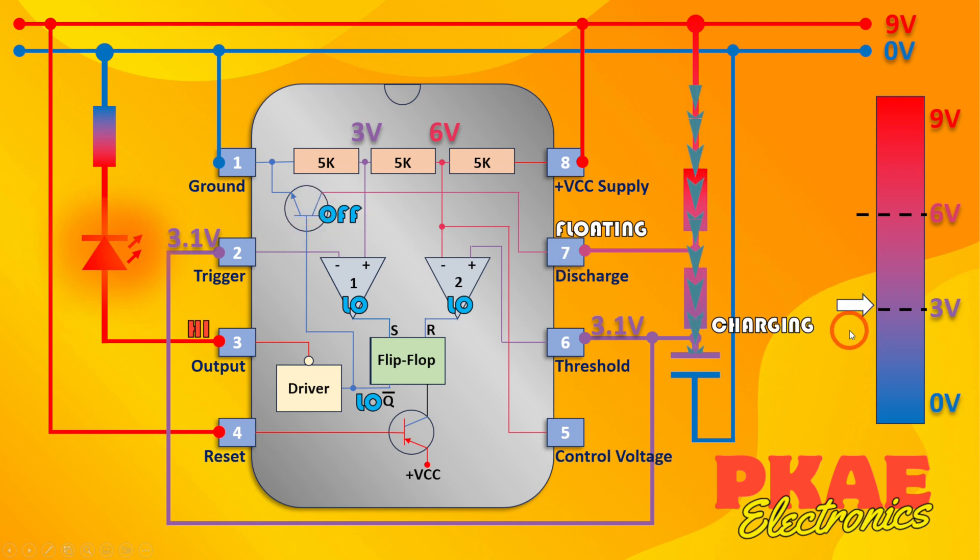But once the charge reaches two-thirds supply, this transistor turns on, which effectively means the discharge pin is connected to ground and the capacitor will start to discharge through this resistor through that pin. Also note that the nine volt supply rail will transfer current through this resistor to that ground pin as well. When the capacitor eventually discharges down to one-third of your supply rail, this transistor will turn off, meaning this pin is now floating and your capacitor will start to charge through these two resistors and the whole thing starts again.